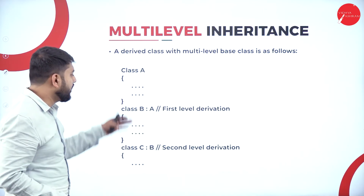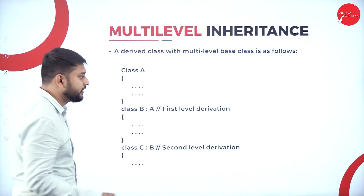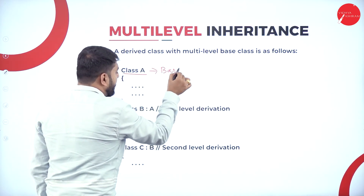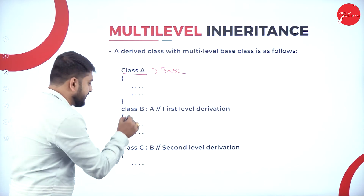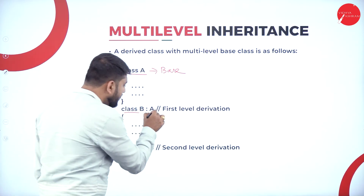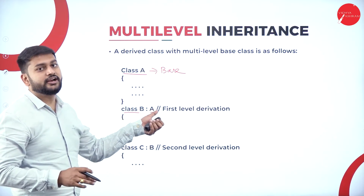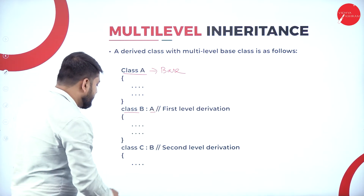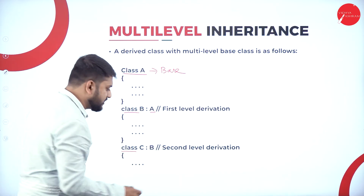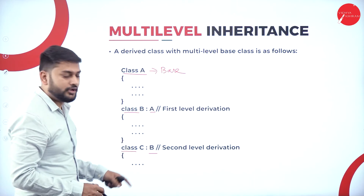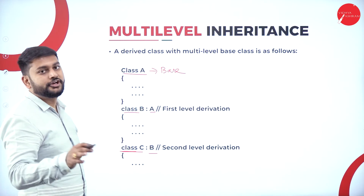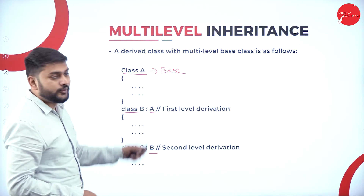Here is how we define multi-level inheritance in code. This is the base class. Class B is getting inherited from class A. Then class C is getting inherited from class B - where class B acts as the base class for C. That's what you need to remember when it comes to multi-level inheritance.